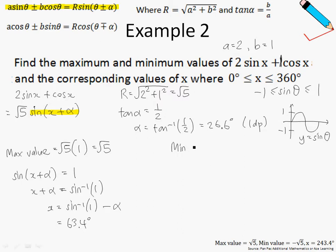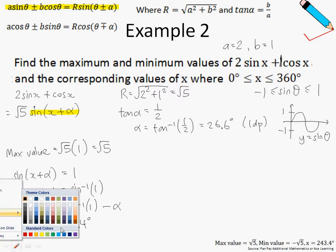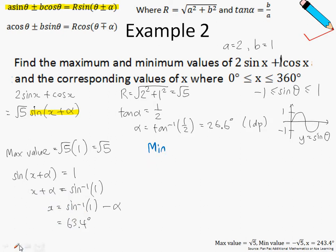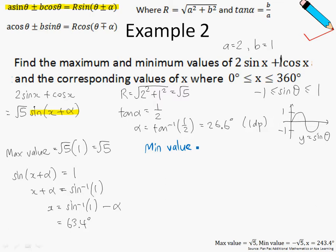How about the minimum value? The minimum value occurs when the sine function is at the negative 1 position. The minimum value should be negative square root of 5. And as we discussed, this happens when the sine of x plus alpha is equals to negative 1.